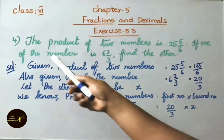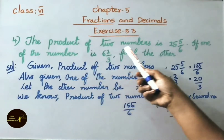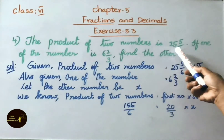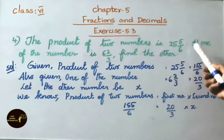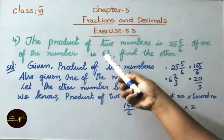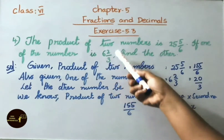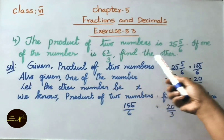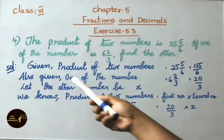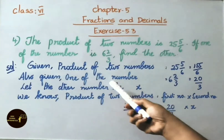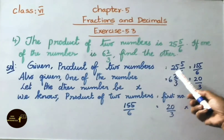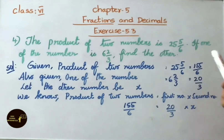See now question number 4. The product of two numbers is 25 5/6. If one of the numbers is 6 2/3, find the other. See the solution now. Given: product of two numbers equals 25 5/6.